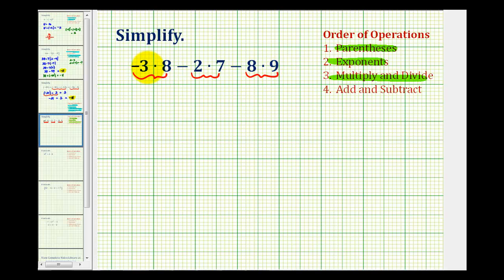Negative 3 times positive 8 is negative 24. Positive 2 times positive 7 is 14, so we'll have minus 14. Minus positive 8 times positive 9 is 72, so we'll have minus 72.